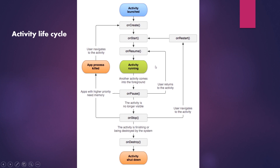After onResume, the activity is shown to the user. When our application is being closed, it goes through onPause, then onStop, then onDestroy. Notice that onDestroy is not reliable and in some cases cannot be executed, so you shouldn't put too much critical code in onDestroy.